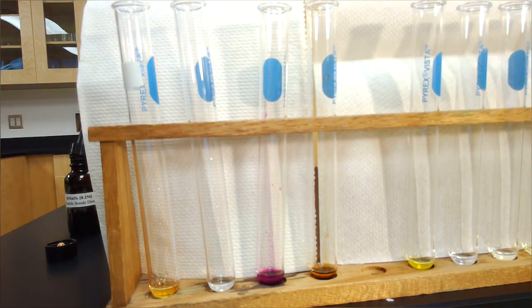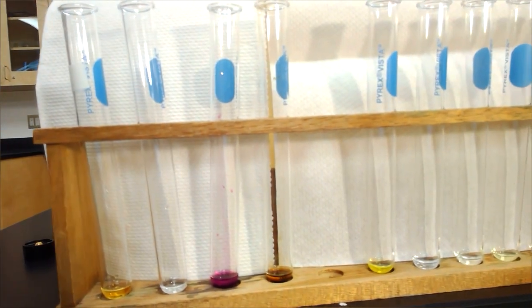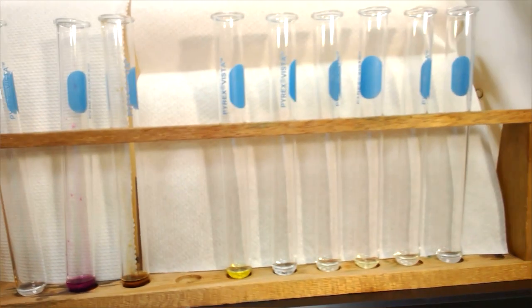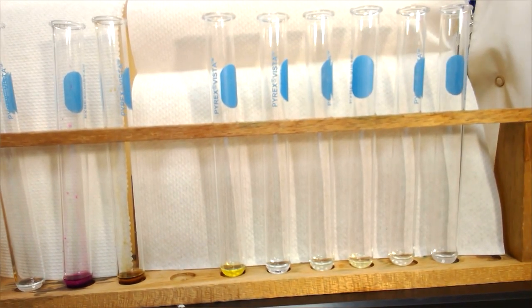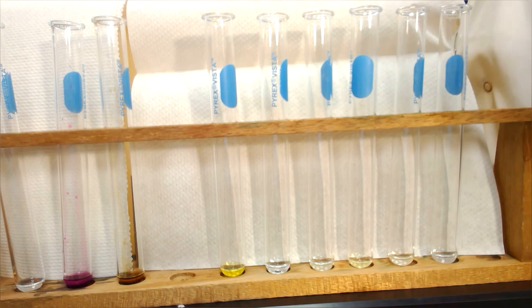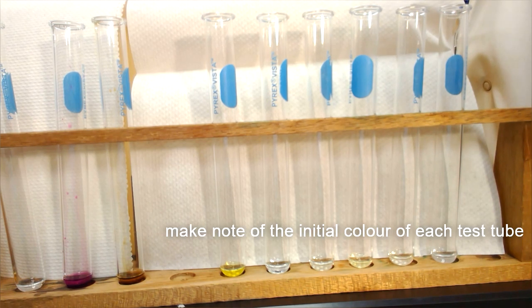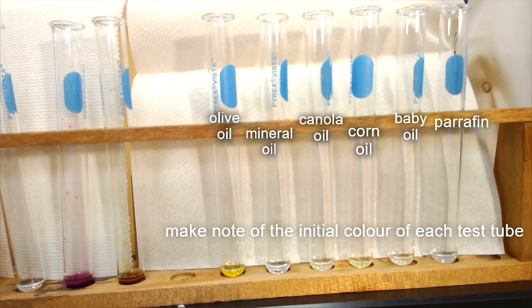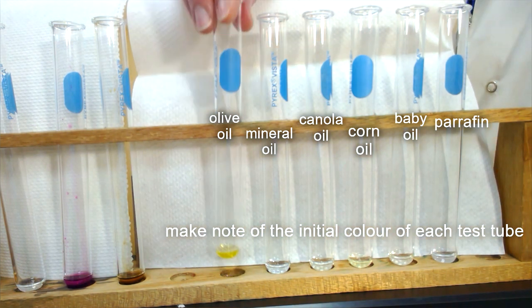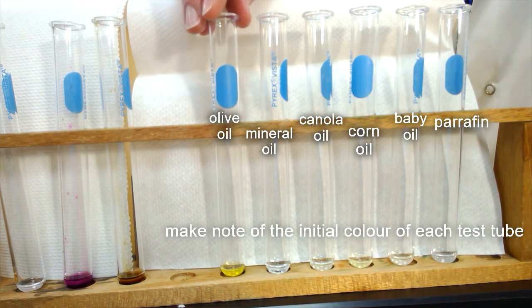And now we're going to test some known oils to see whether they have double bonds in their structure. So if you look at your evidence chart, you see that we have six oils that we are going to test, and we are going to test them in an order different than you'll see in your chart, but we are going to start with the test tube on your far left, which is olive oil.